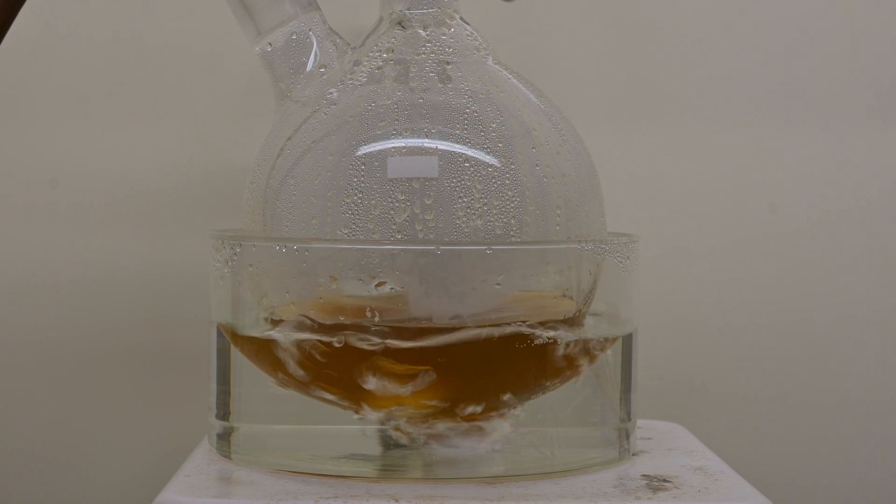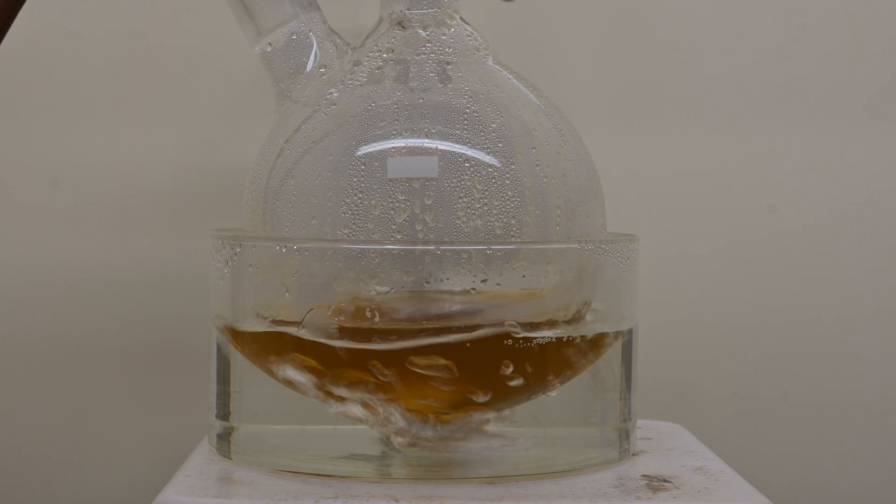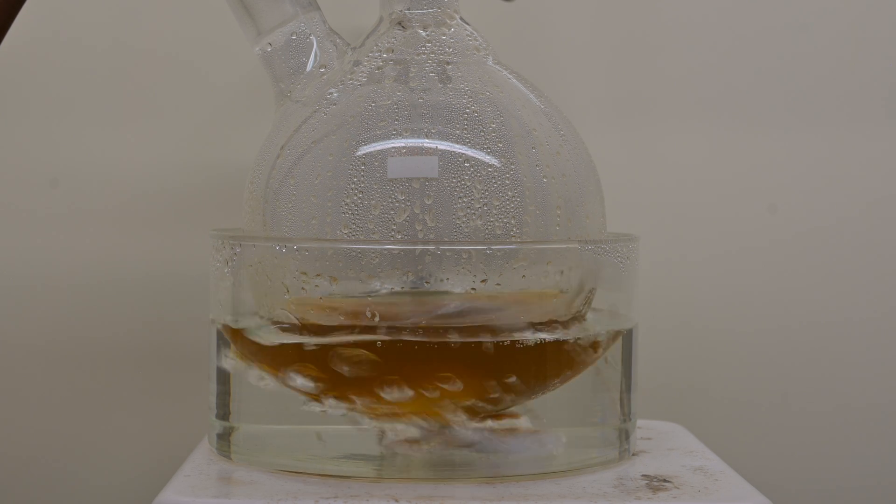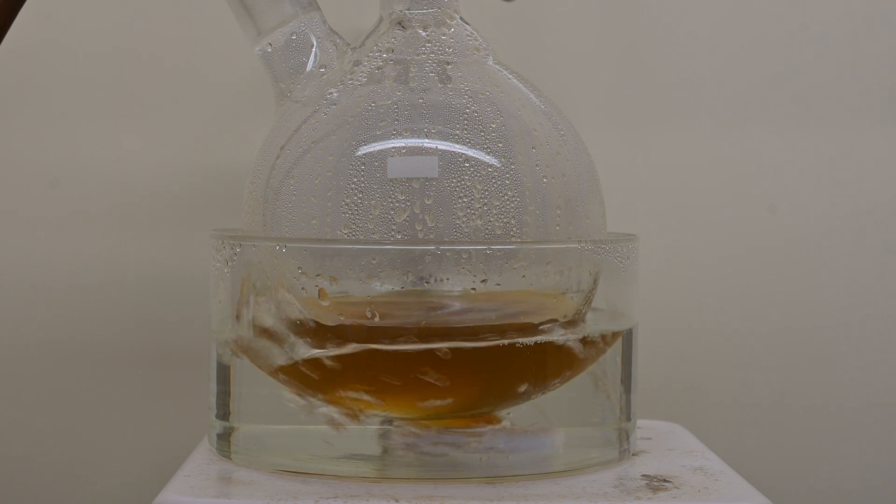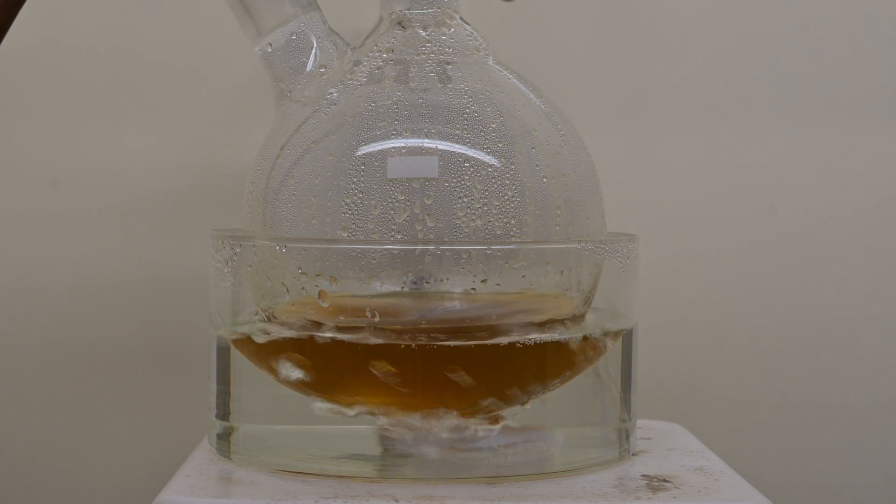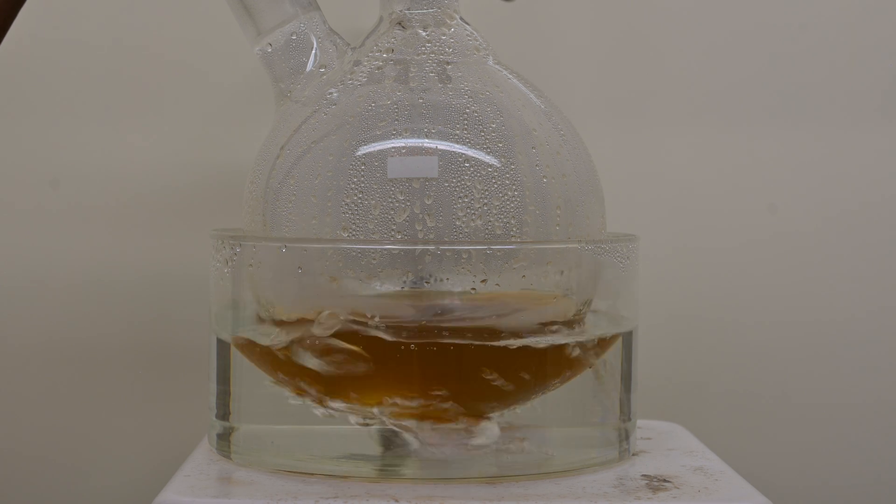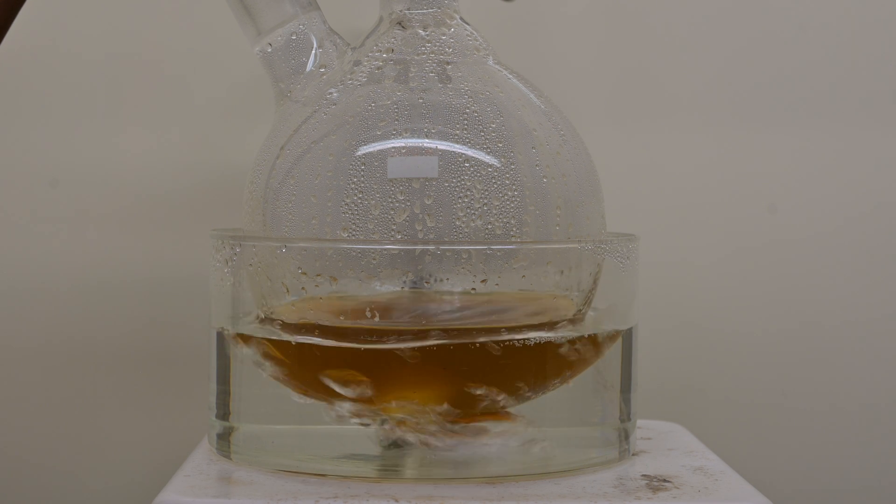The reaction occurring here is the reduction of a nitro group to an amine. In this solution, the tin chloride that forms reacts with the formed amine to create a chlorostanite salt, which is water soluble, so we need to break that salt down.